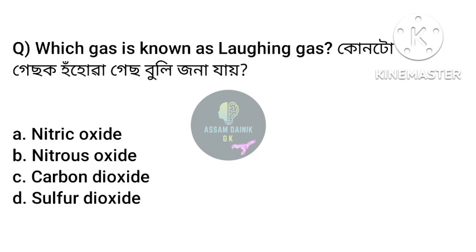Which gas is known as laughing gas? Option A: Nitric oxide. Option B: Nitrous oxide. Option C: Carbon dioxide. Option D: Sulphur oxide.